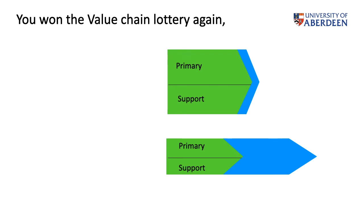Let's imagine that you won the lottery again, and now you're an expert in value chains, so you can choose the best one — the one at the bottom again. Why? Because the blue area, which is the margin in the value chain, is bigger than the blue area of the value chain on top. Now let's review what the margin is to make sure everyone understands. The margin is the difference between the revenue and the cost, and it's generally measured as a percentage. Products with a high margin have a high difference between revenue and cost.